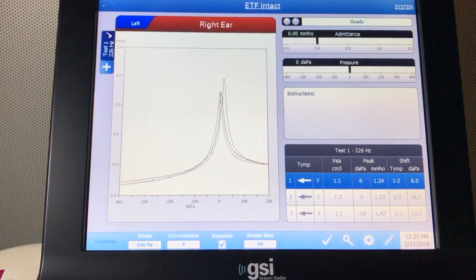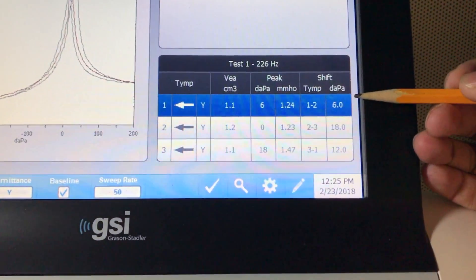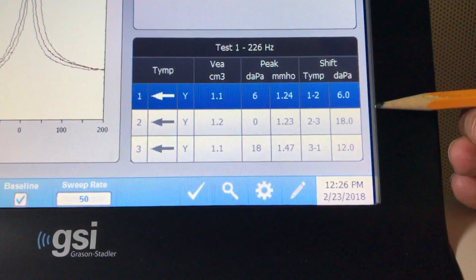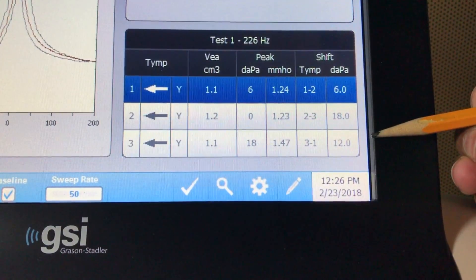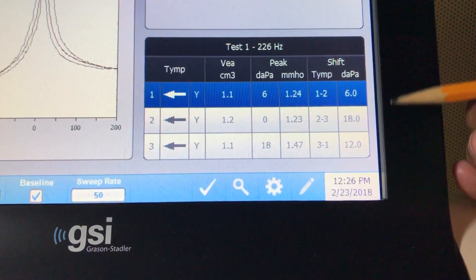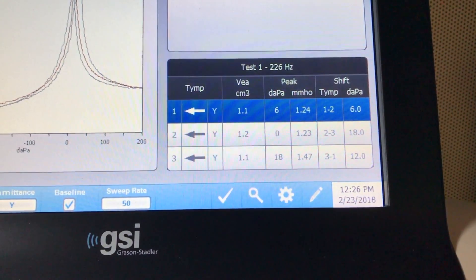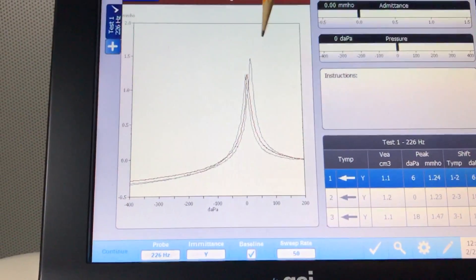Here you can see the shift in the middle ear pressure from the baseline to the second temp and the third temp. If you see a change of around 15 to 20 decapascal, that is an indication that the eustachian tube is functioning normally.